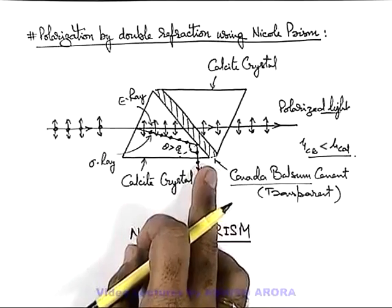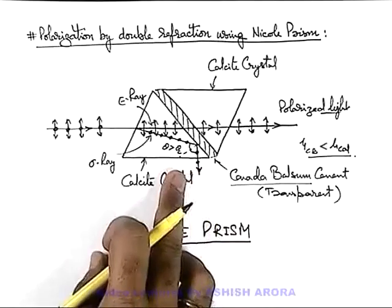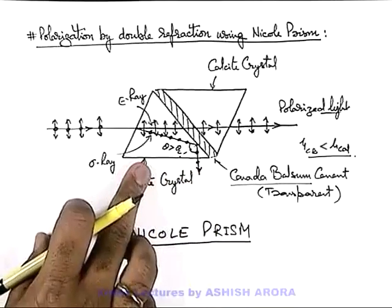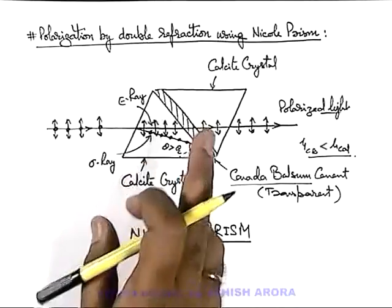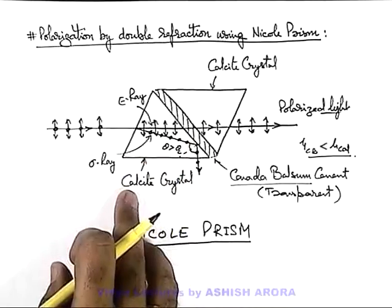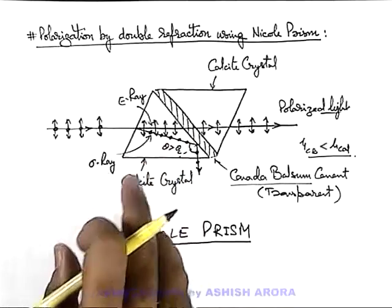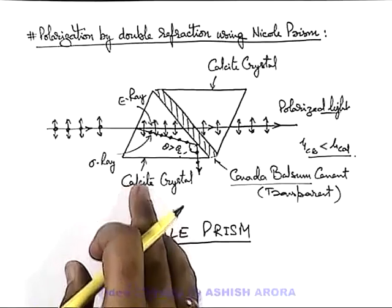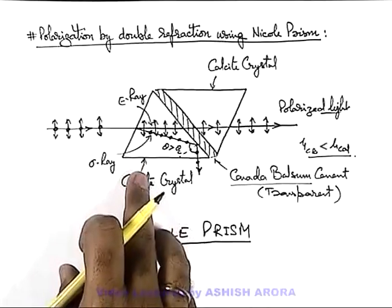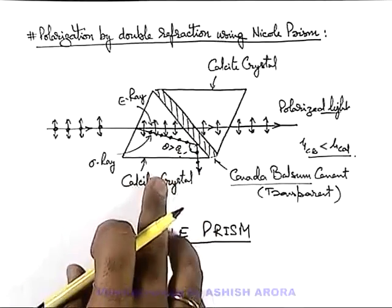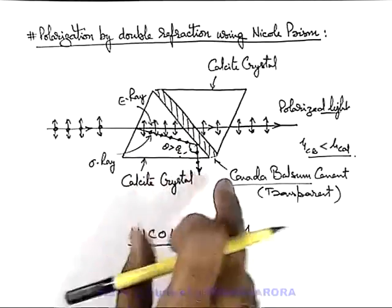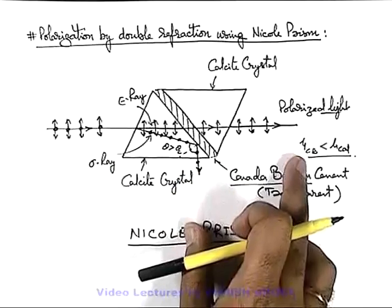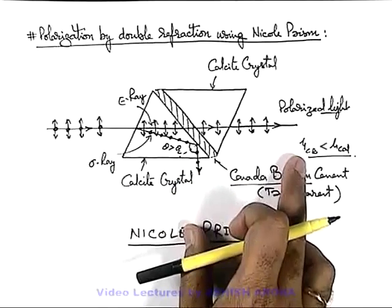The Nicol prism was one of the first polarizing devices, made by the scientist Nicole, a physicist working on optical phenomena. It was the first optical device used for the polarization of light.